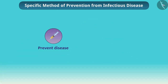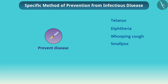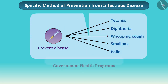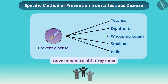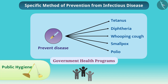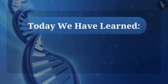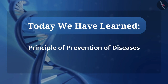There are many vaccines available today that prevent disease. Tetanus, diphtheria, whooping cough, smallpox, polio, and many more vaccines are available. These are government health programs to protect children from infectious diseases, and these health programs should be available to all. Therefore, for the prevention of any infectious disease, everyone should practice public hygiene and vaccination. Today we have learned about the principle of prevention of diseases.